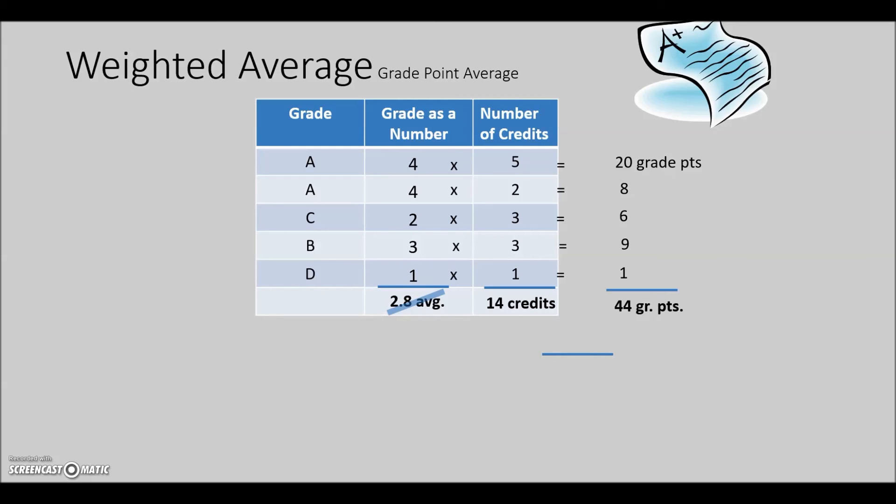And last, divide the grade points total by the credit hours total to give you the weighted credit hours GPA.